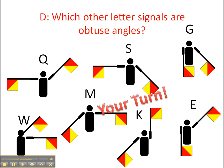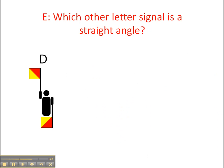Question E is: what other letter signal is a straight angle? Well, letter D is a straight angle, and that's because it follows a straight line. Here's the middle point and that follows a straight line all the way across.